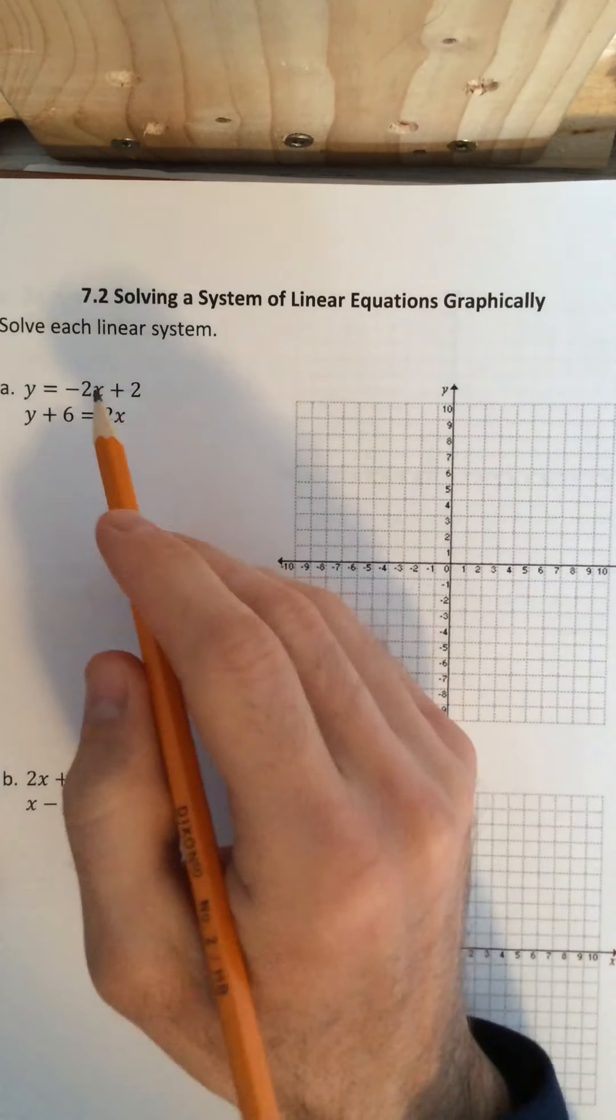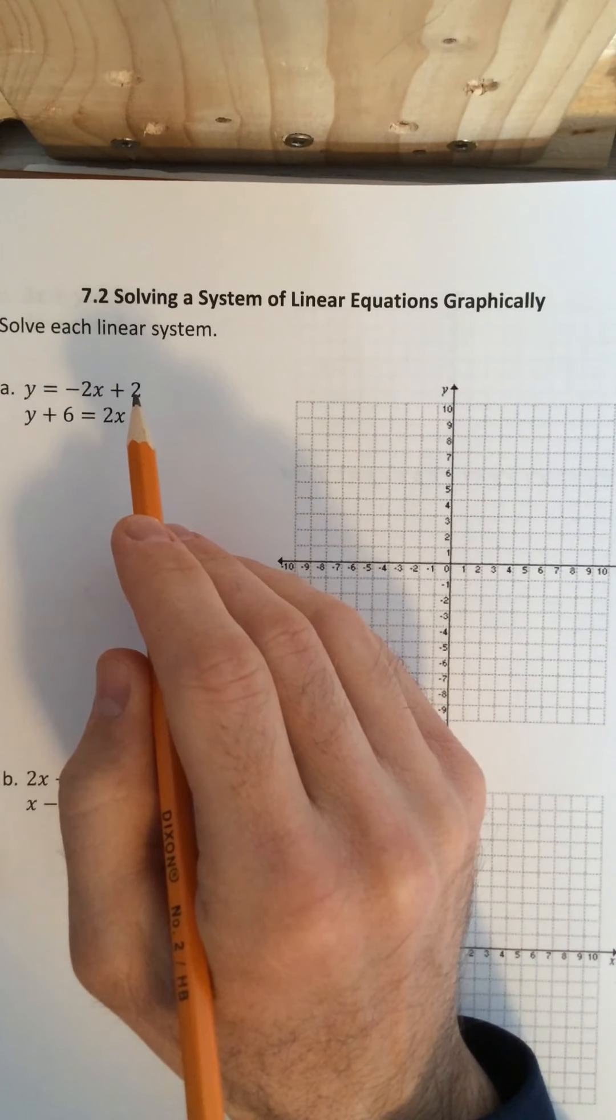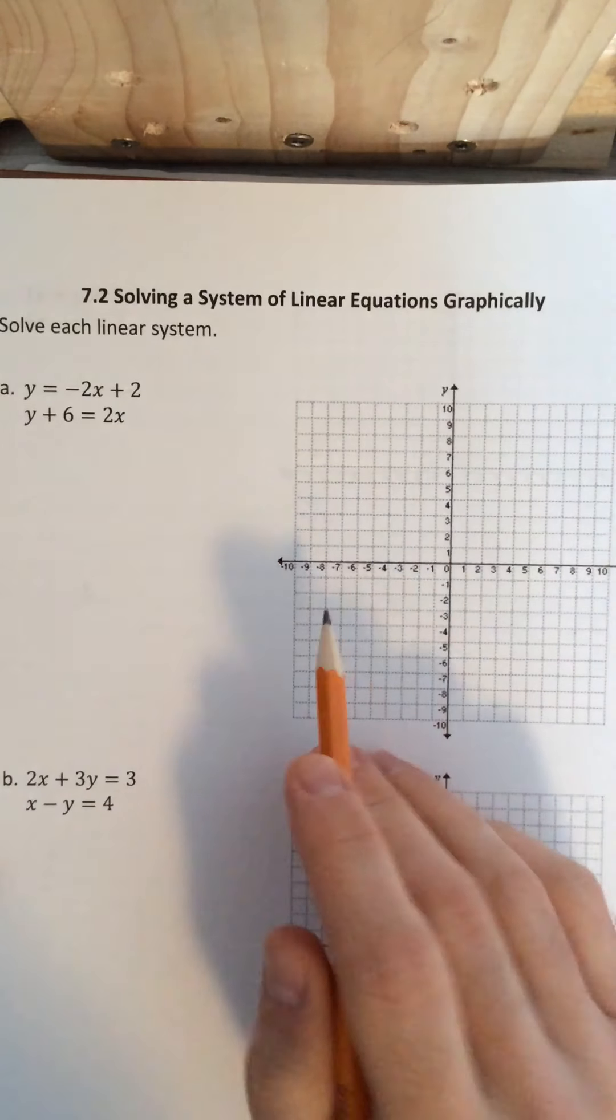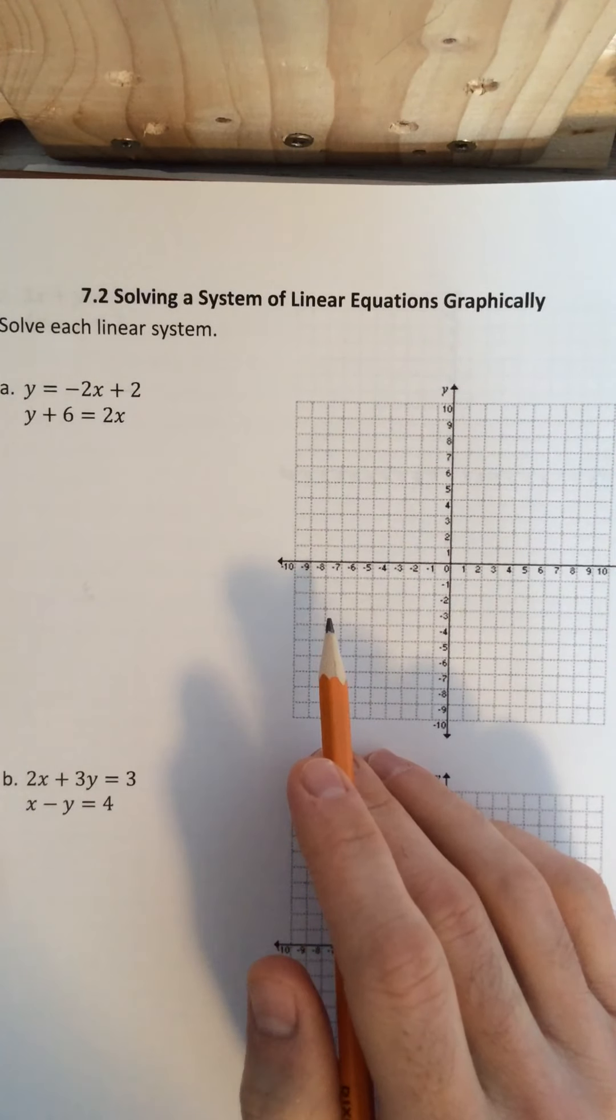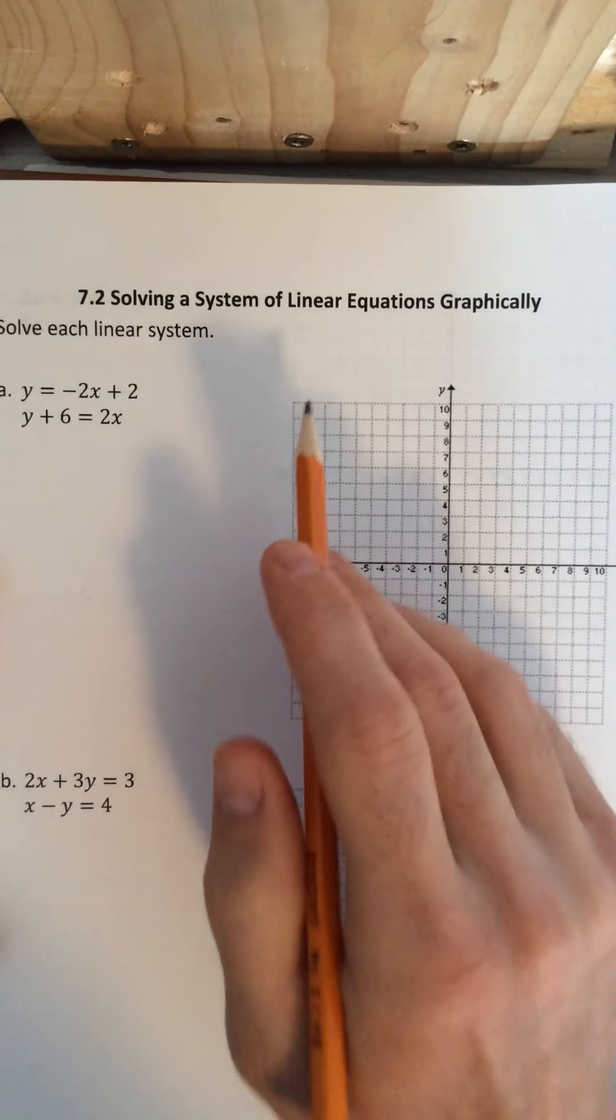And what we're going to do is graph each of these linear equations on this graph paper and we're looking for the intersection point. That intersection point is the solution to the system.